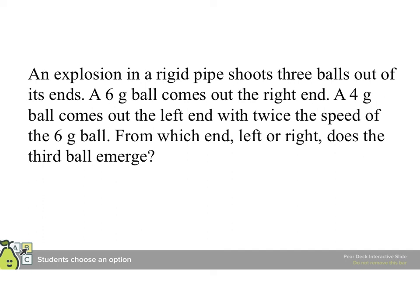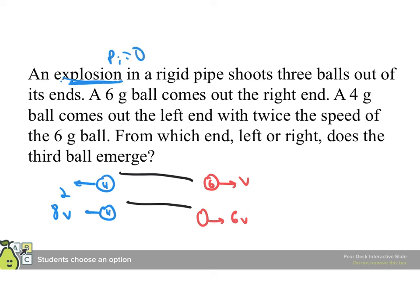An explosion in a rigid pipe shoots three balls out of its end. A six gram ball comes out the right end. A four gram ball comes out the left end with twice the speed. And from which end, then, is the third ball? So, we have something like this. And we know that the six gram one comes out with some speed. But the four gram one comes out going the other way with twice that speed. If we think in terms of momenta, we know that the six gram ball comes out with, we'll still call it, say, six V. But the four gram ball comes out with a momentum, which is eight V. On the other hand, the explosion means that there was no momentum at the start. They were originally at rest. And so, the third one that comes out has to have enough momentum to make it zero. We have eight one direction and six the other. We need two more units, two V more units of momentum to make it balance out. So, it has to have come out moving to the right. We don't know how fast because we know the relative masses. But we know that it will come out from the right.